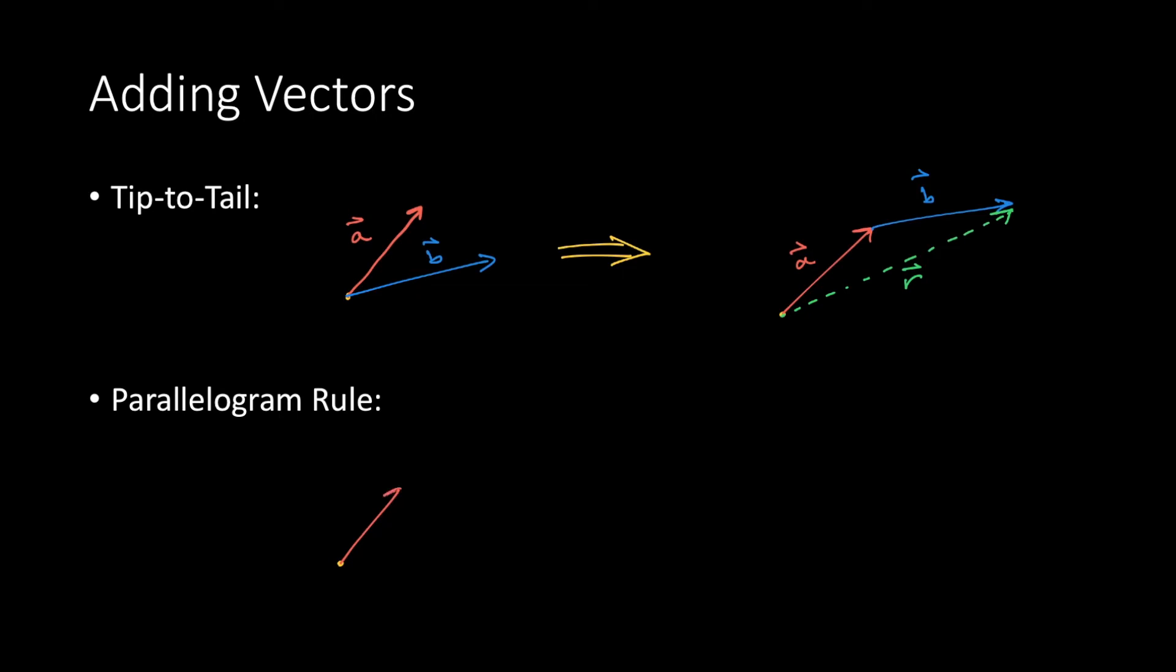The other way of doing this is with the parallelogram rule. This is just another way of visualizing the same thing. Let us use vector a and b again. Instead of placing the vectors tip-to-tail, you place all of the tails at the same point.